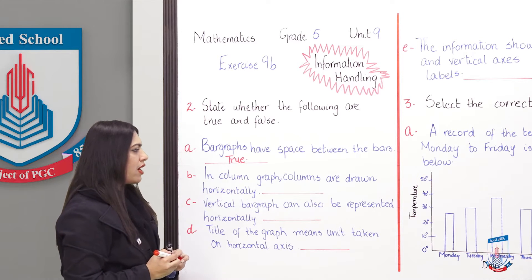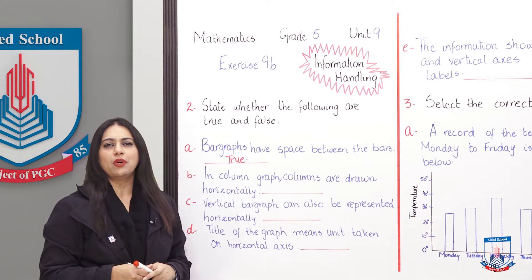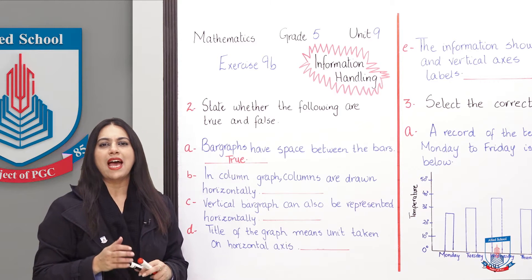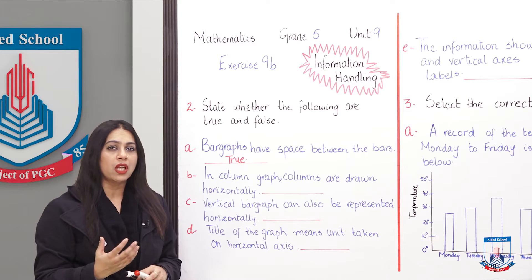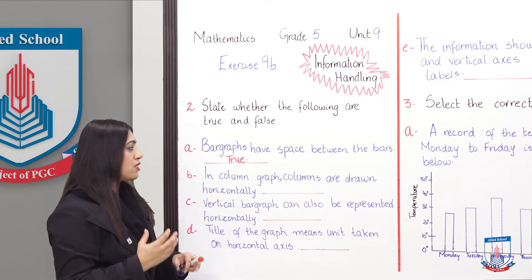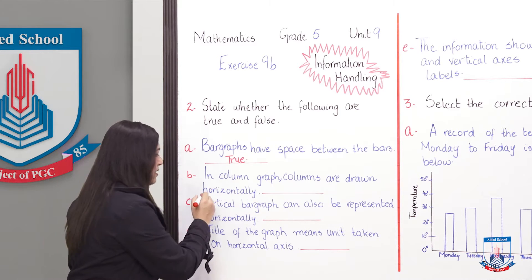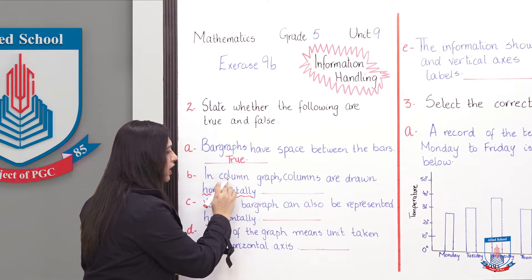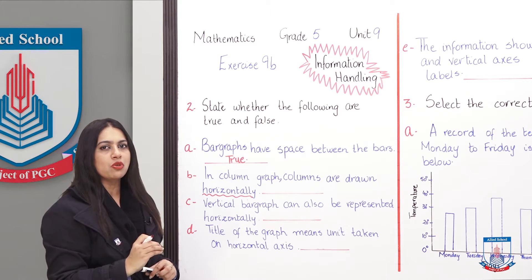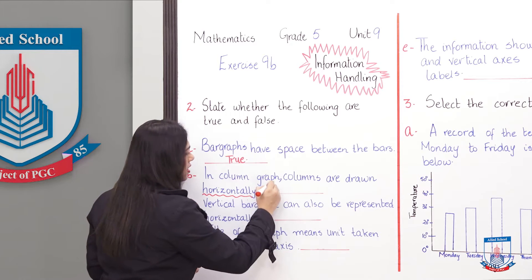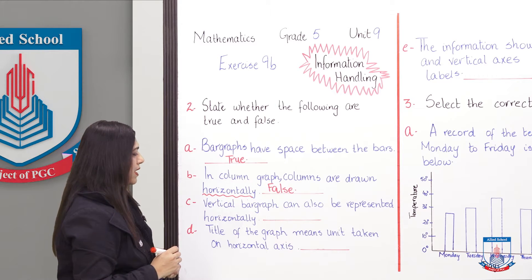Part B: 'In a column graph, columns are drawn horizontally.' Students, we have also studied column and vertical bar graphs. If you recall, in a column graph the columns are drawn vertically, not horizontally. So this statement is FALSE.